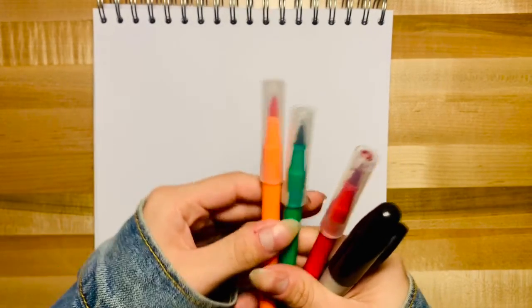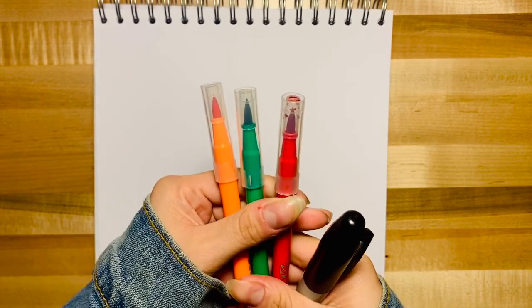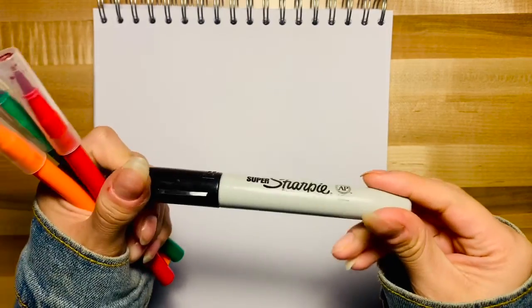All right everybody, today we'll be drawing a monster using the letter G. The colors you'll need today are orange, green, and red. We'll be using our Sharpie as usual.